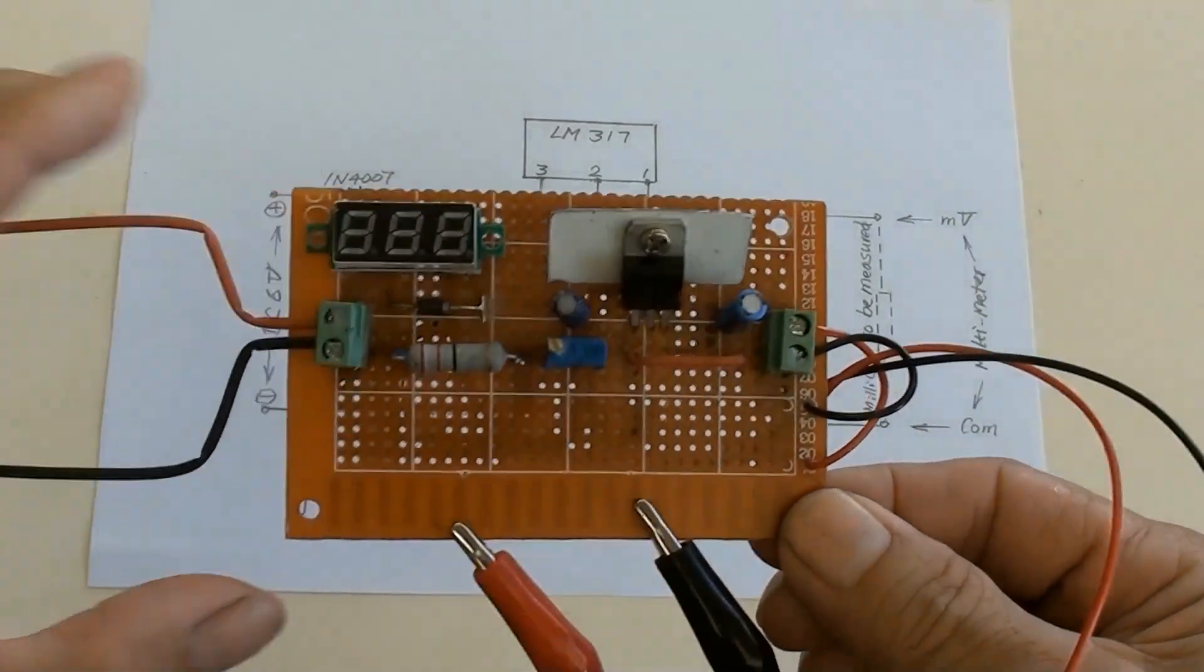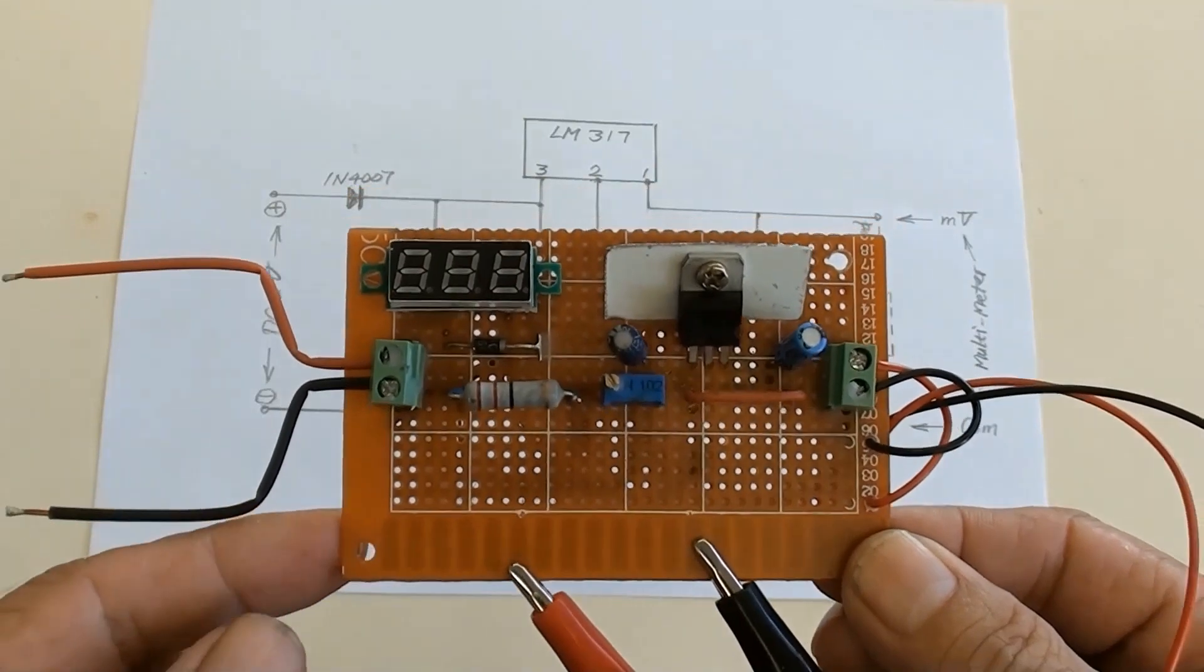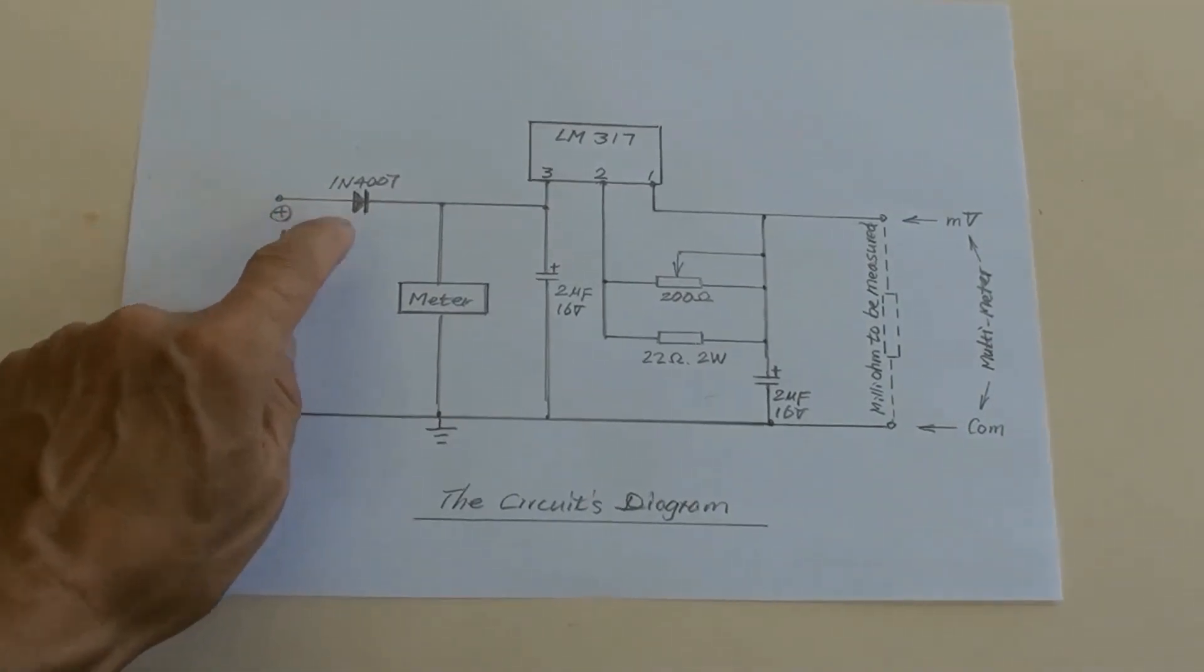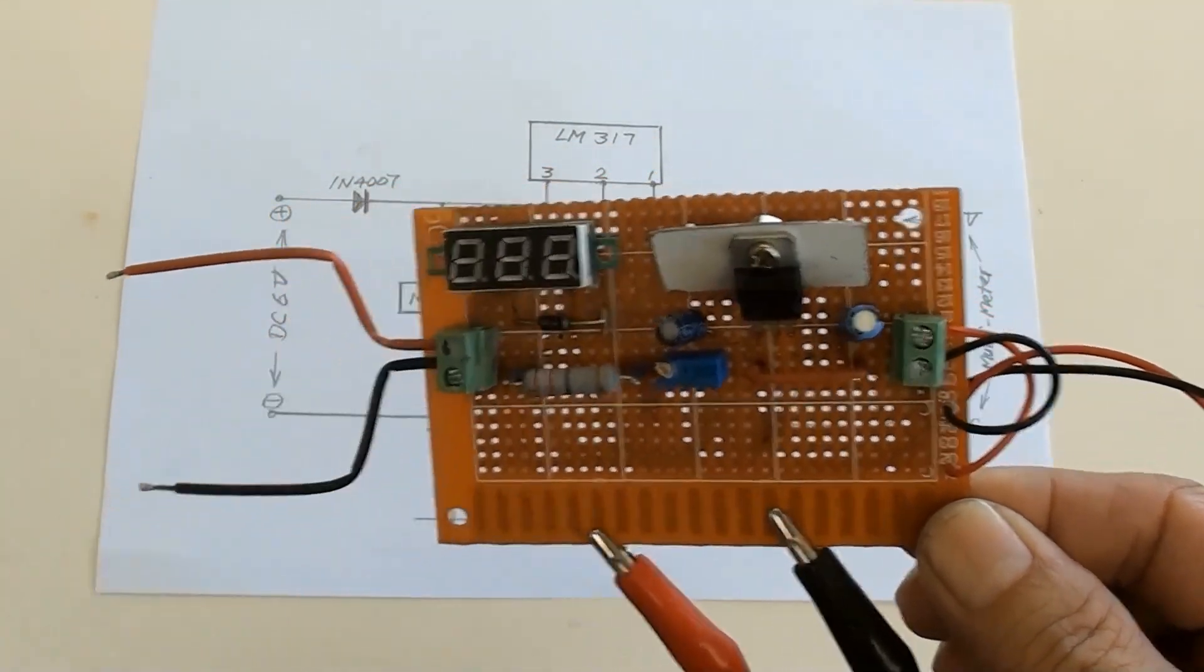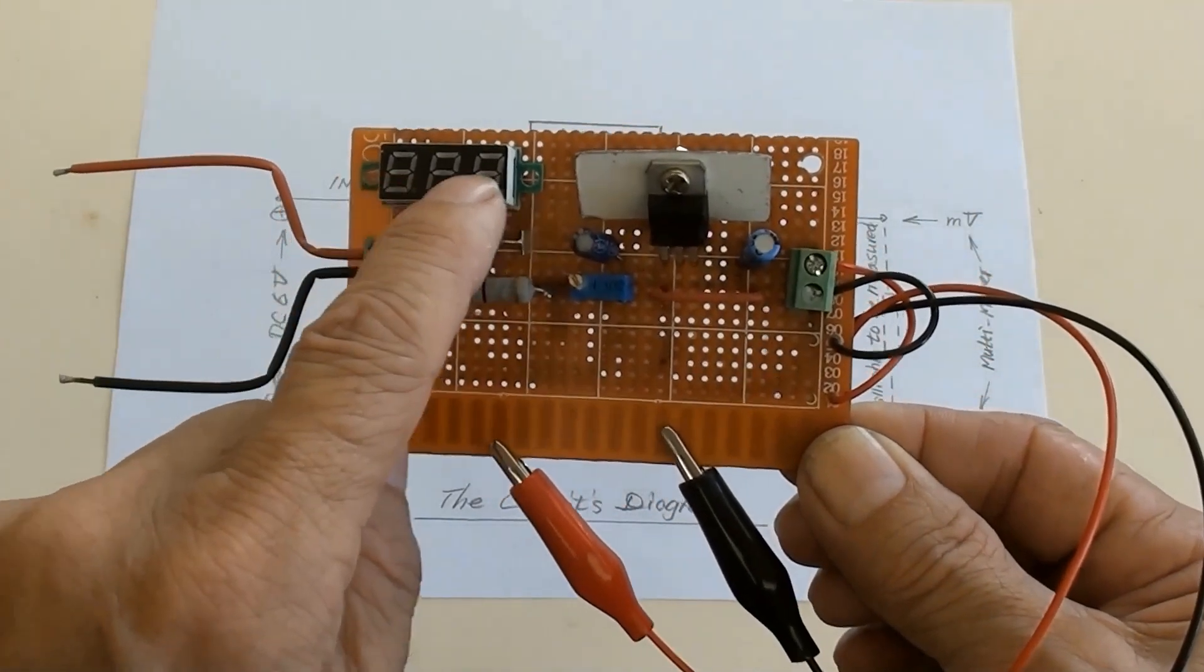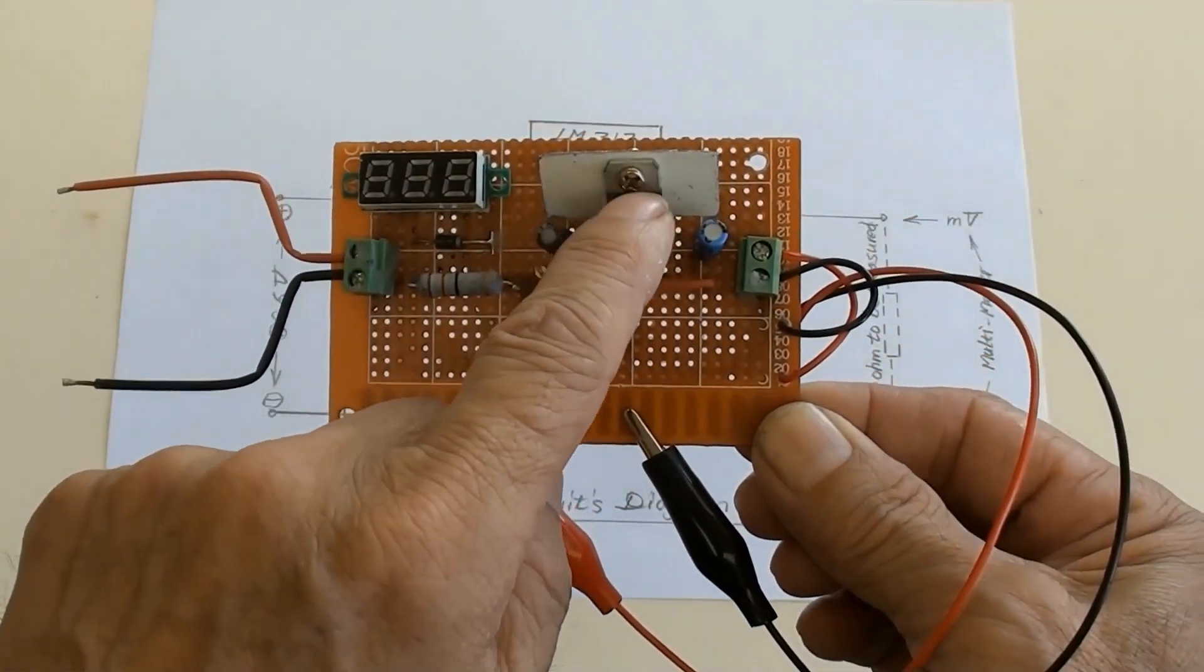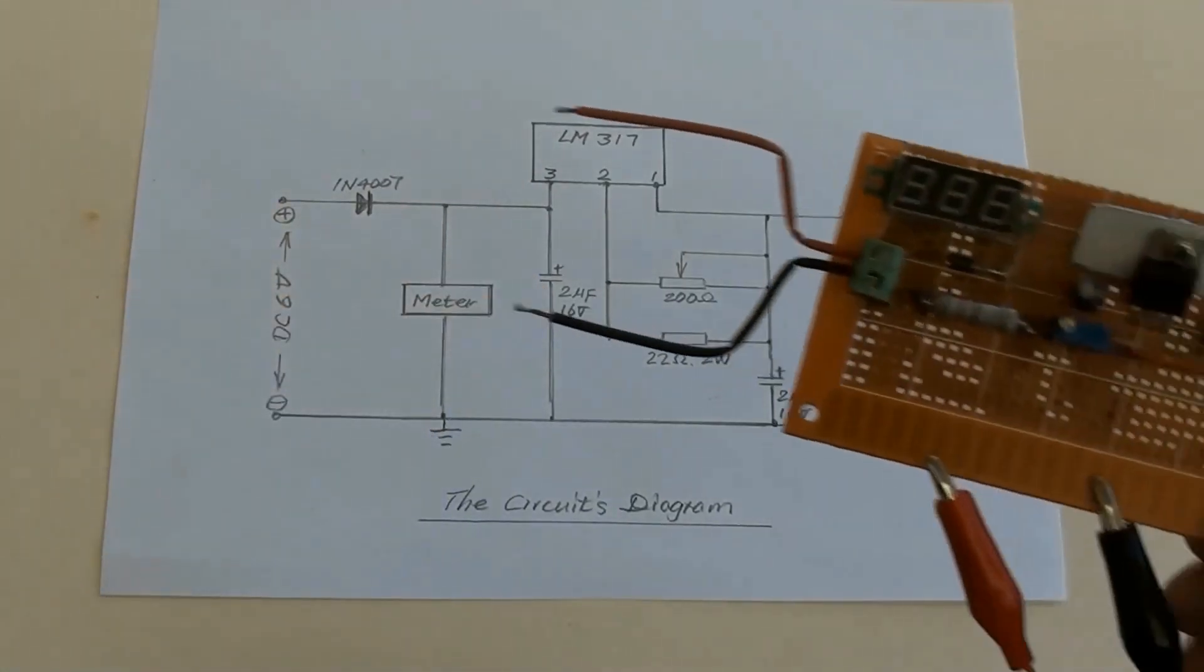Here we go, the parts have been soldered on the mini PCB board. These are input terminals for DC 6 volts. Here is a diode type 1N4007, a mini digital voltage meter. An LM317 with heatsink attached. Two capacitors of 2 microfarad are here.